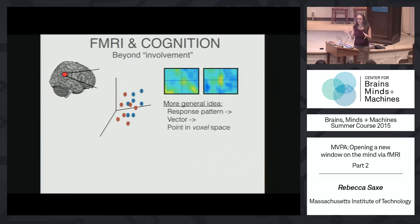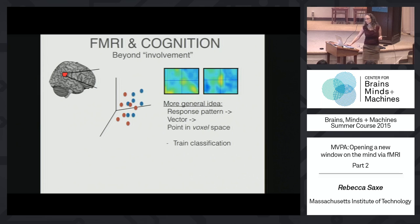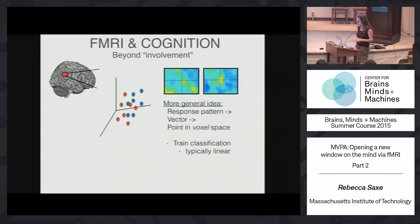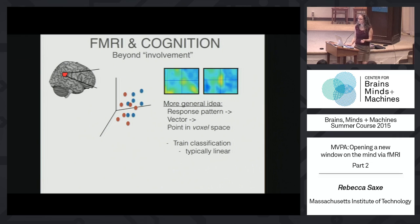A set of points in a multidimensional space is exactly the kind of problem that machine learning has been working on for the last 20 years. Everything that has ever happened in machine learning could now be used in fMRI. About five years ago, people realized we could think of the response to every stimulus as a point in voxel space. The first most obvious thing to do is to think of this as a classification problem — can we decode conditions, find clusters, find dimensions?